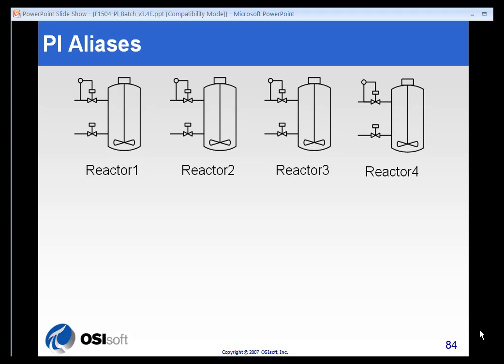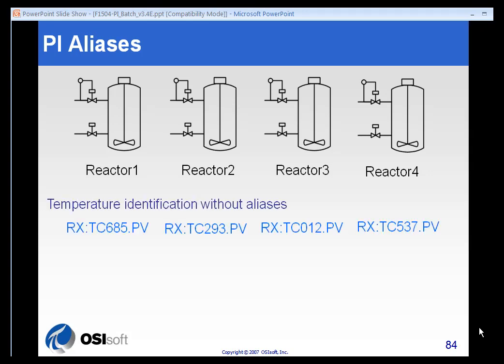Aliasing is a process by which we assign common, more human-readable names to tags that might not otherwise contain indications of what they were monitoring. Here is an example of temperature identification without using aliases. I have four reactors — one, two, three, and four — and these reactors all have temperature sensors in them. Without using aliasing, I would have to know that for Reactor 3, the temperature sending unit was Rx Tc012.pv.